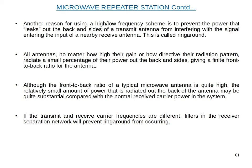Although the front-to-back ratio of a typical microwave antenna is quite high, the relatively small amount of power radiated out the back of the antenna may be quite substantial compared with the normal received carrier power in the system. If the transmit and receive carrier frequencies are different, filters in the receiver separation network will prevent ring-around from occurring.